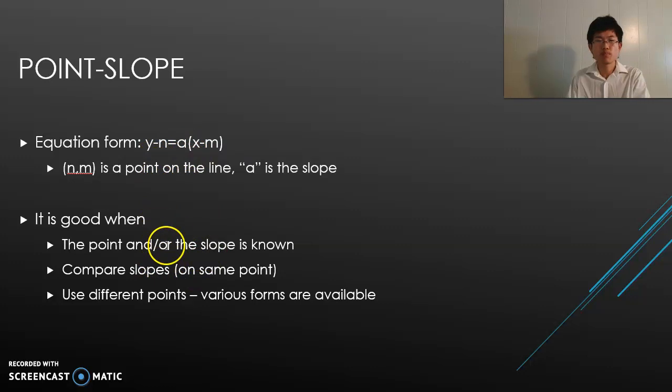It's good when the point and the slope is known. You can compare the slopes just like before with the same point, or you can use different points to create an equation. So students might have different points they chose, but it's still the same equation.